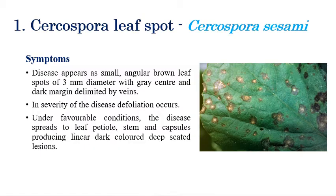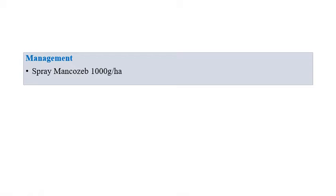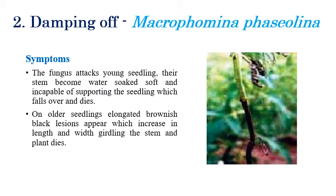The first disease is Cercospora leaf spot, caused by Cercospora sesamicola. The symptoms include angular brown color spots on the leaf surface with a light gray center. The spots normally range from 3 mm in diameter. In severe cases, defoliation occurs under favorable conditions, and the disease can spread to the leaf petiole, stems, and capsules. For management, spraying of Mancozeb at the rate of 1 kilogram per hectare is recommended.